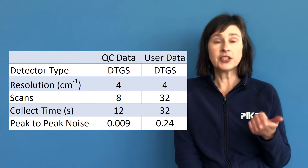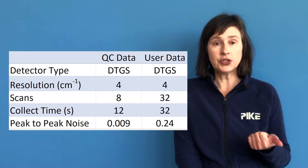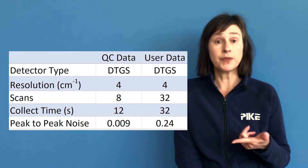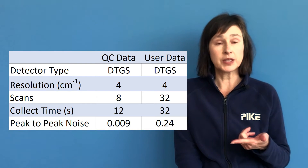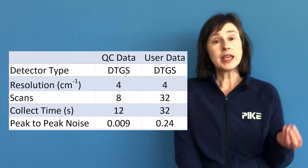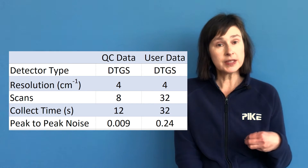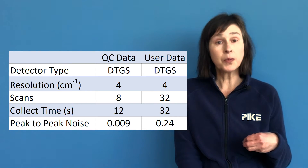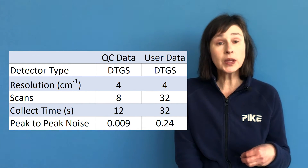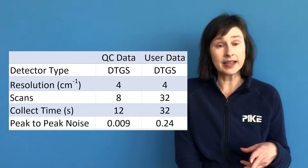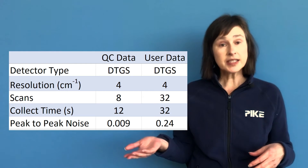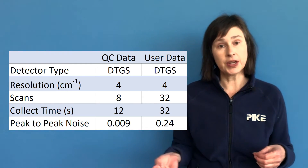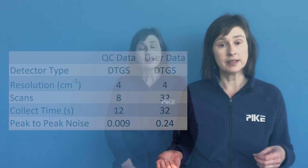So the next step is to look at collection parameters. Both spectra were collected using a DTGS detector at four wavenumber resolution. However, the Pike QC data was collected using only eight scans, and the customer collected 32 scans.